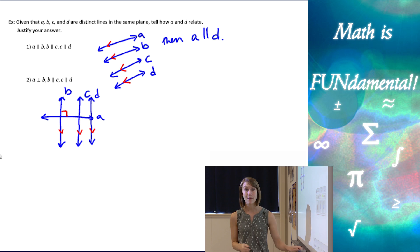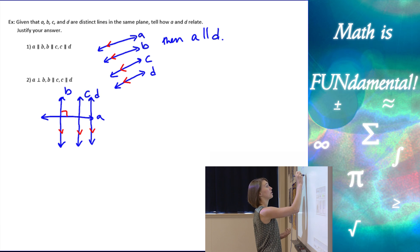So, now I need to make another line D that's parallel to C. So, now what can we say about A and D? Well, let's look at our diagram, and we can see that A and D are going to have to be perpendicular. A perpendicular to D.